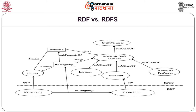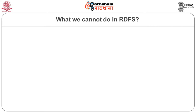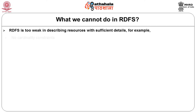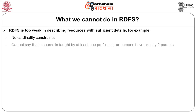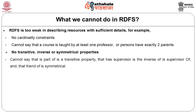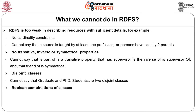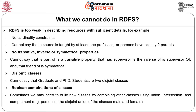To have a system work logically and semantically, we need to provide this kind of schema information so the system can understand each piece of vocabulary and infer accordingly. However, RDFS also has limitations: it is too weak in describing resources with sufficient detail. There are no cardinality restrictions — we cannot say 'a course is taught by at least one professor' or 'persons have exactly two parents.' We cannot express transitive, inverse, or symmetrical properties, nor can we say that graduate students and PhD students are two disjoint classes.